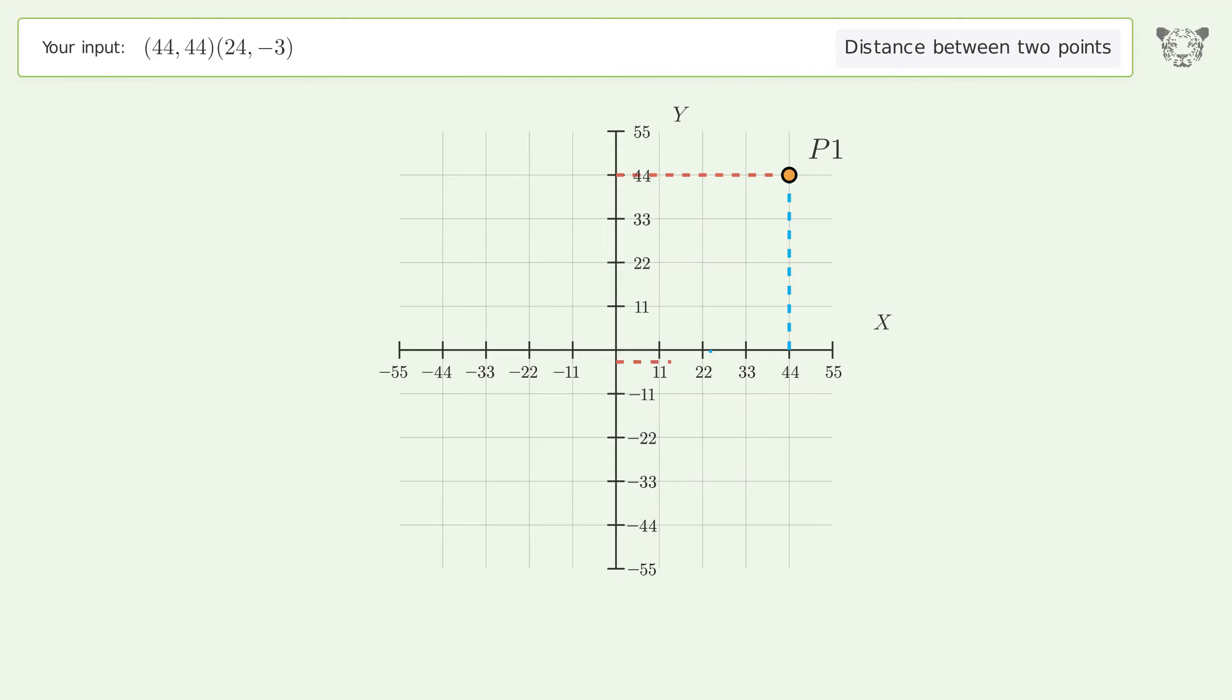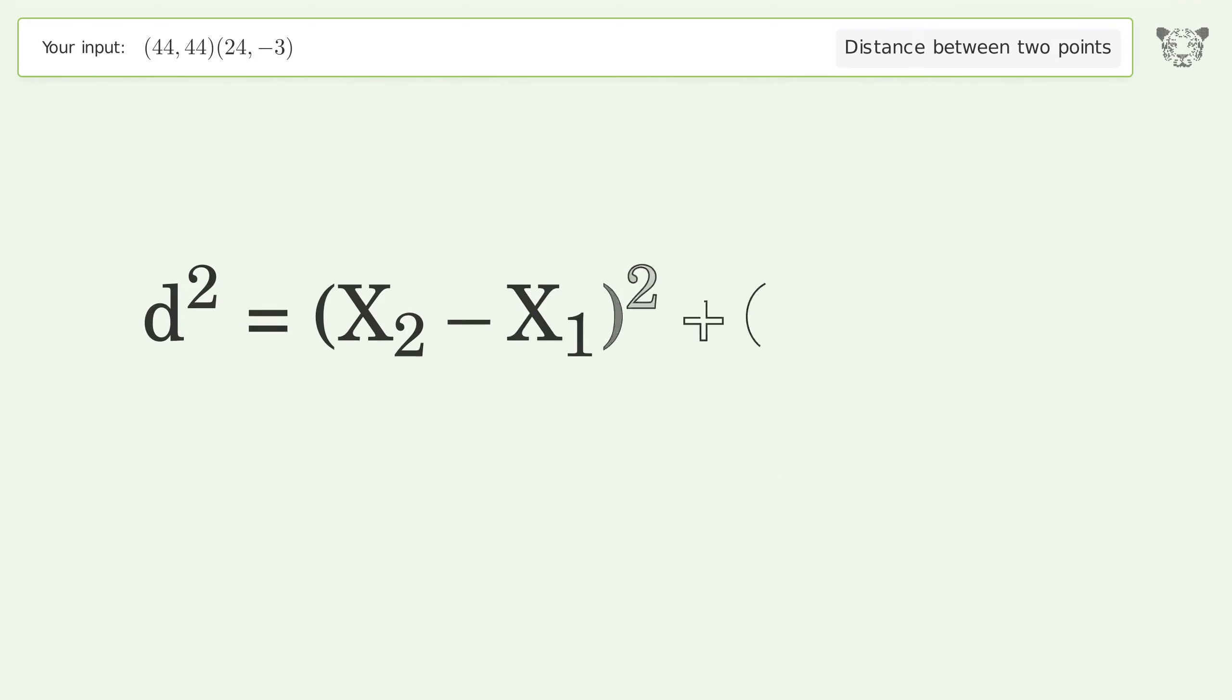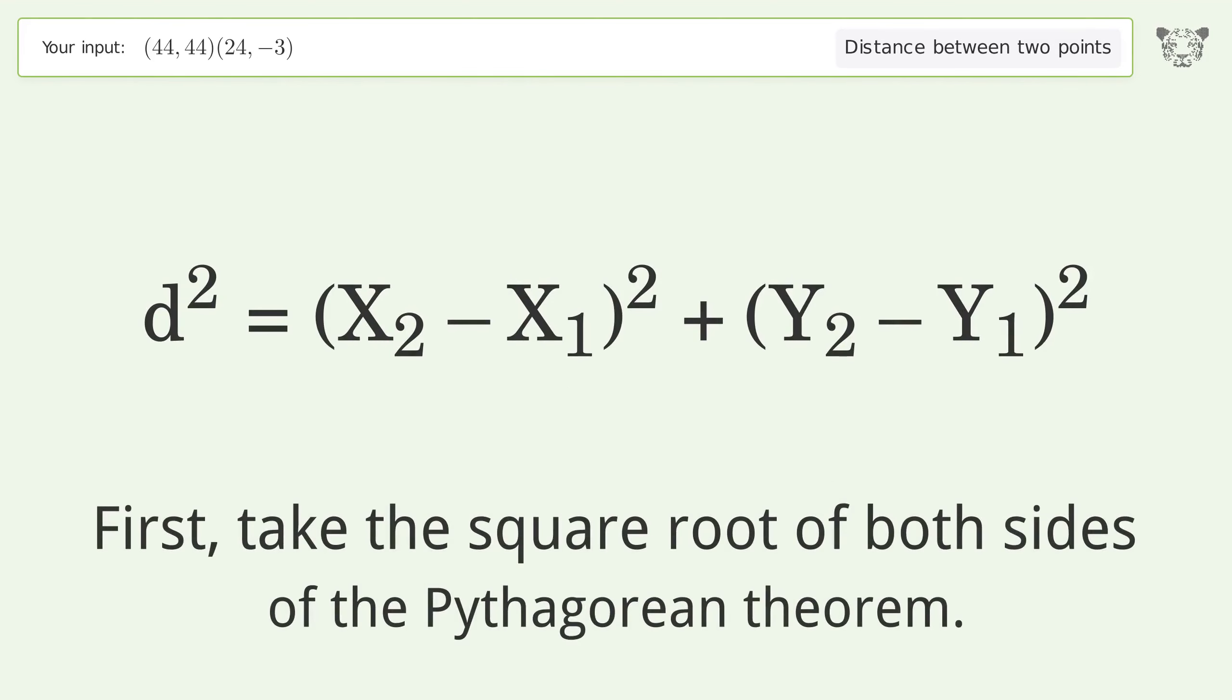d is the distance between the two points. First, take the square root of both sides of the Pythagorean theorem. This gives us the distance formula.